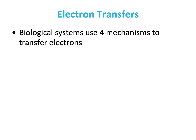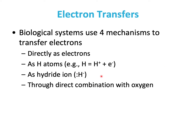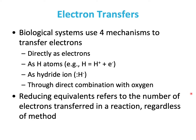Biological systems use four mechanisms to transfer electrons: they can be directly transferred as electrons, as hydrogen atoms, as hydride ions, or through direct combination with oxygen. Reducing equivalents refer to the number of electrons transferred in a reaction, regardless of the method.